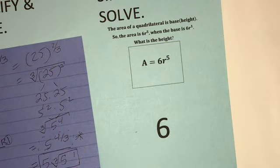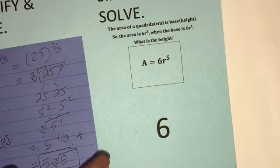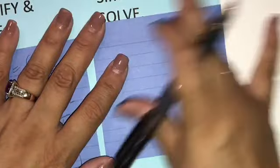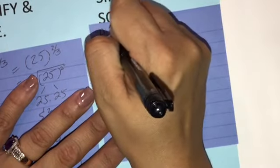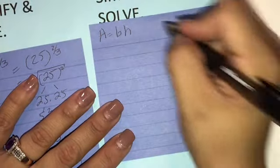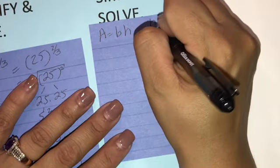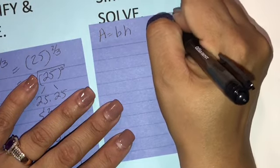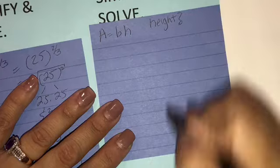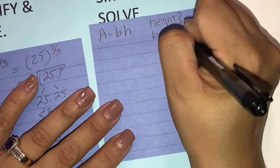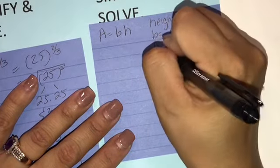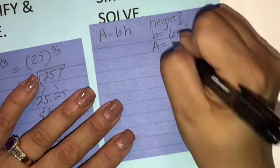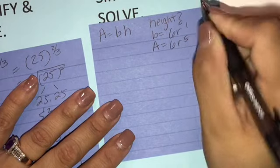Okay, for number 6, the area of a quadrilateral is base times height. So the area is 6 r to the 5th. When the base is 6 r to the 1st, what is the height? So area equals base times height. And I'm looking for the height. I know my base is 6 r to the 1st. I know my area is 6 r to the 5th.